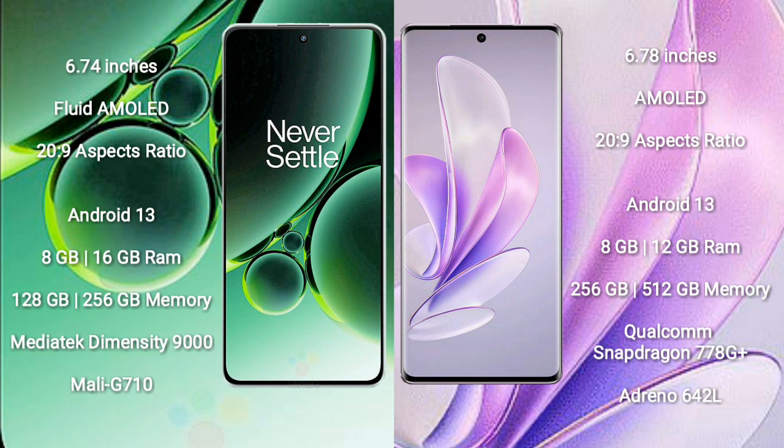Vivo A70 comes with 8GB and 12GB RAM, and 256GB and 512GB internal storage. It features a Qualcomm Snapdragon 778G Plus processor and GPU Adreno 642L.